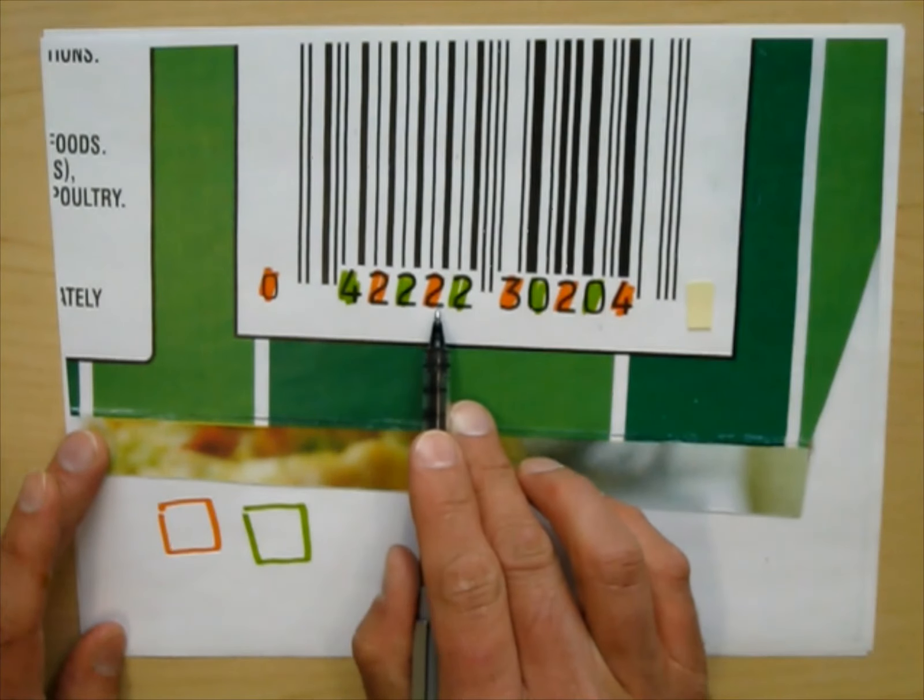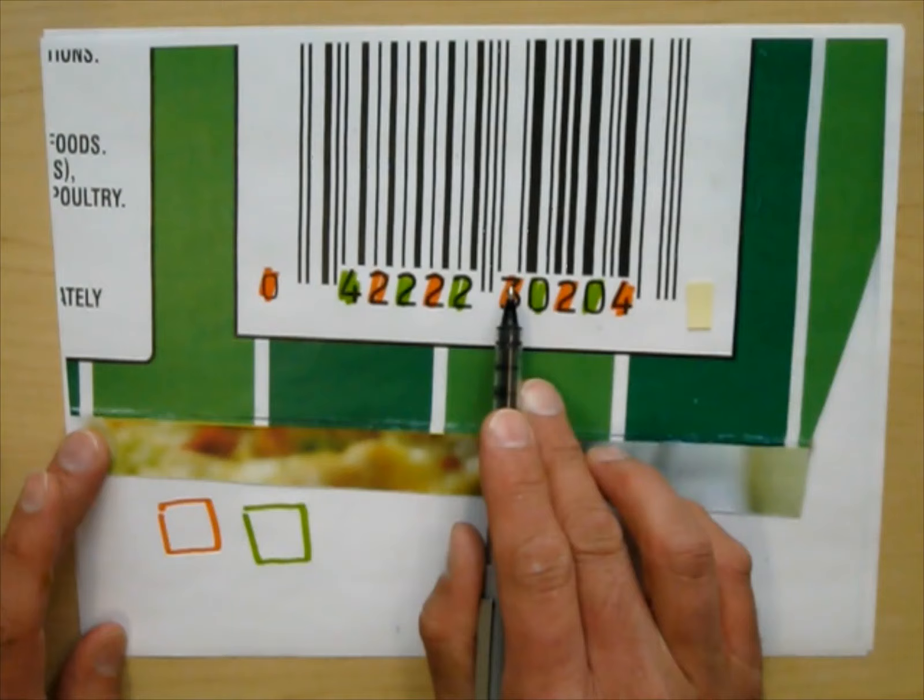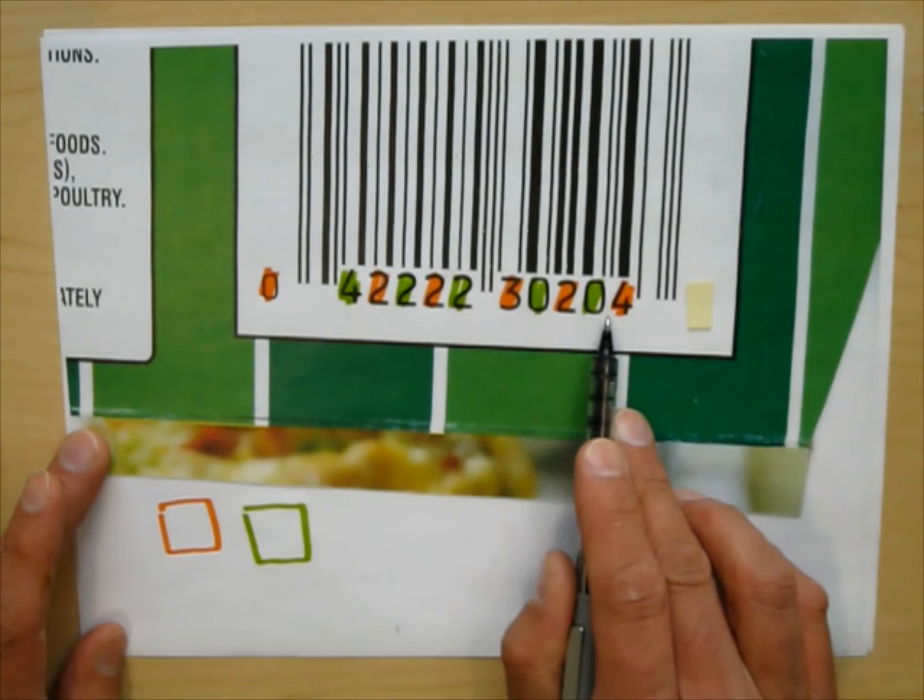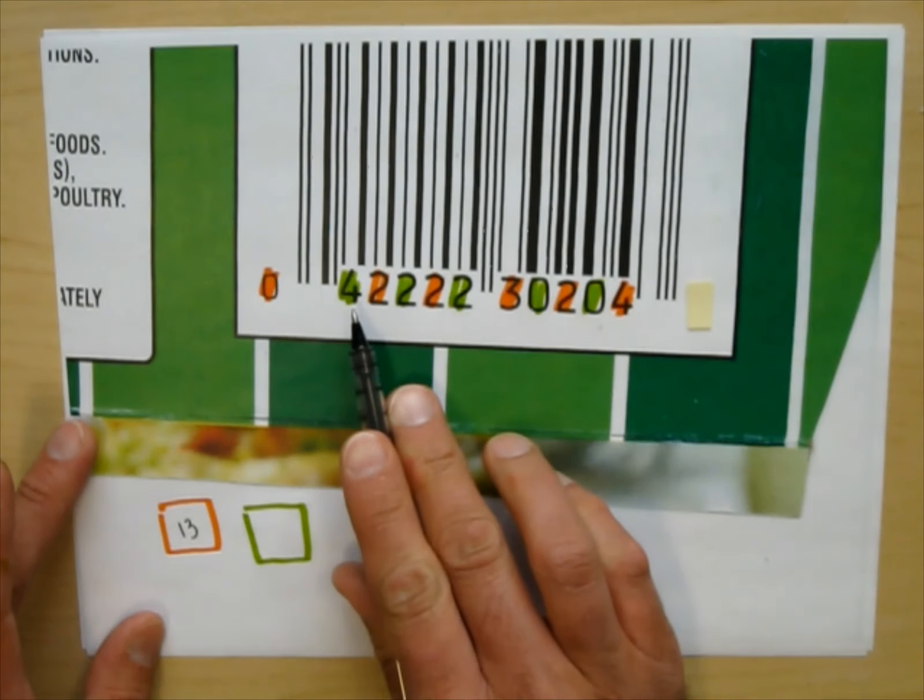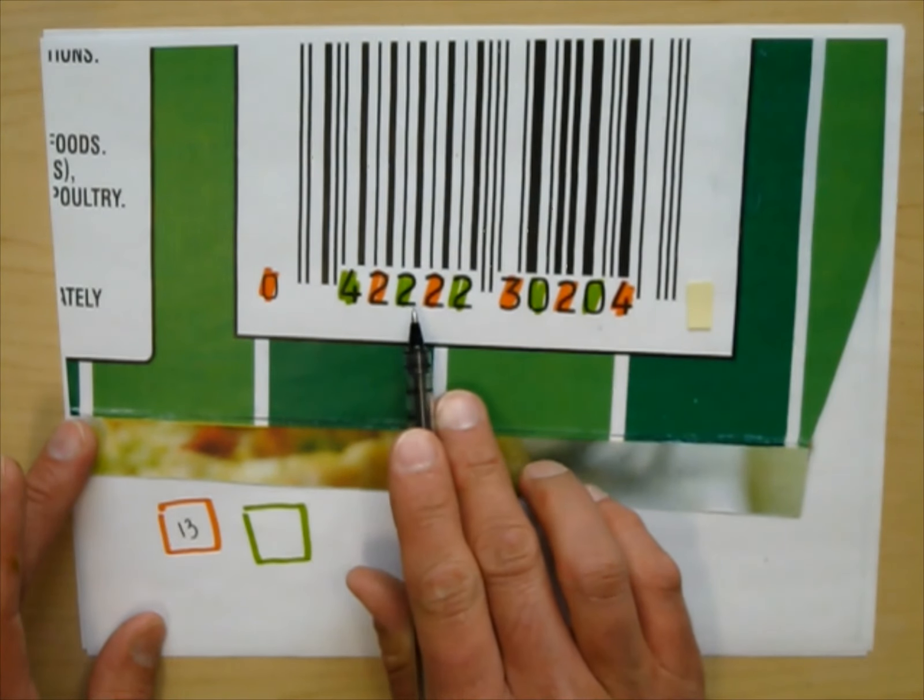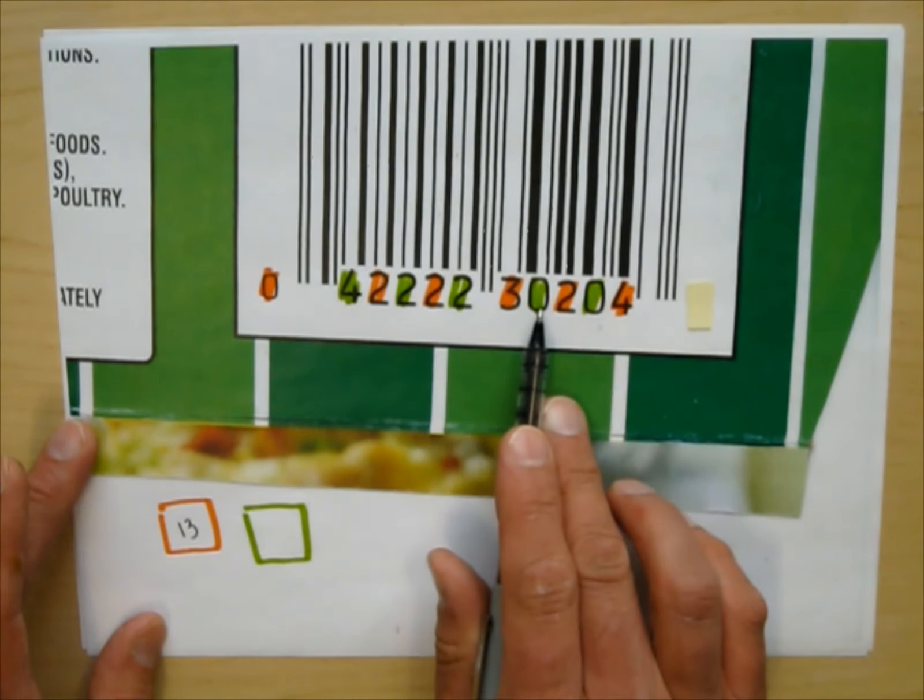What do the orange ones add up to? 0, 2, 4, 5, 6, 7, 8, 9, 10, 11, 12, 13. Now what do the green ones add up to? 4, 5, 6, 7, 8, 8.